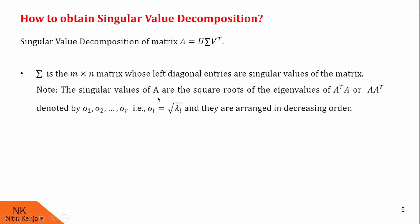Singular values of A are the square roots of the eigenvalues of A transpose into A, or A into A transpose, denoted by sigma 1, sigma 2, up to sigma R. That is, sigma i is nothing but the square root of lambda i. And these singular values are arranged in decreasing order. So if you want to find the singular values of any matrix A, first find A transpose into A or A into A transpose, then find the eigenvalues of that matrix, then take the square root — you will get the singular values of matrix A.